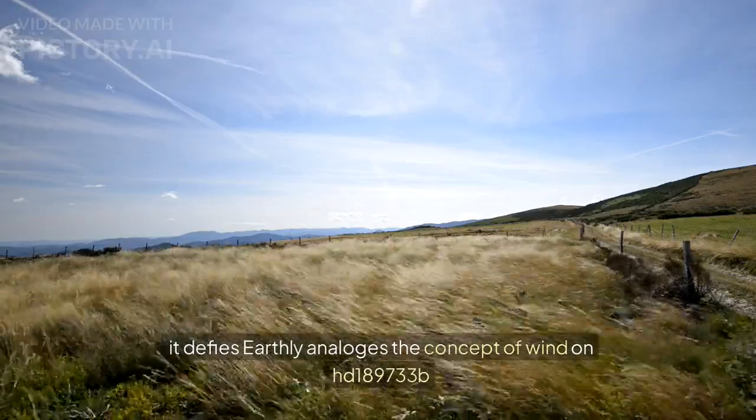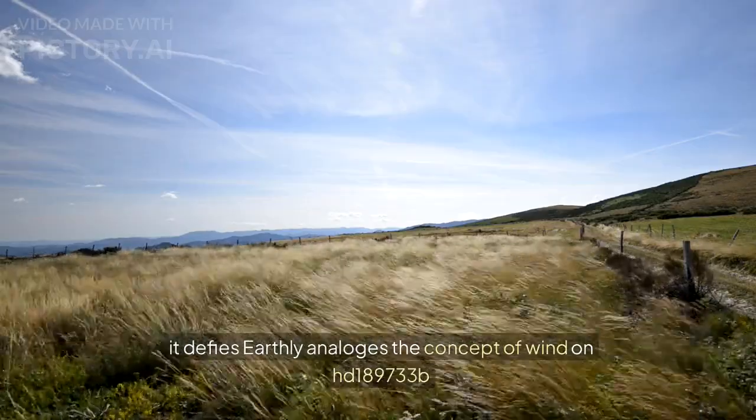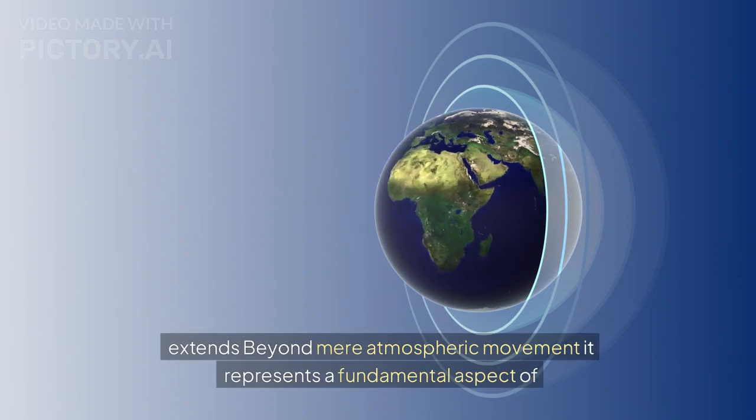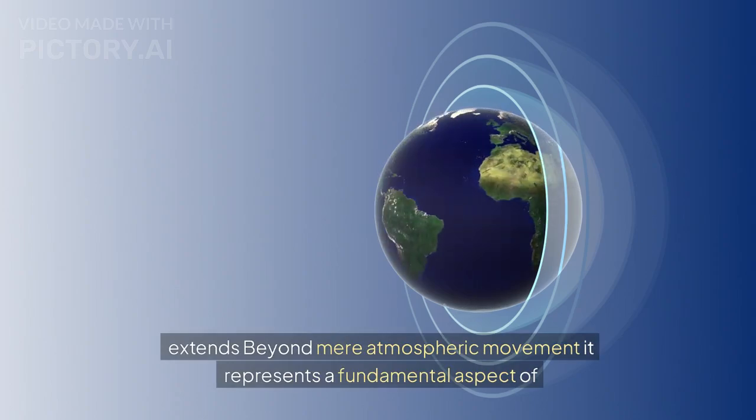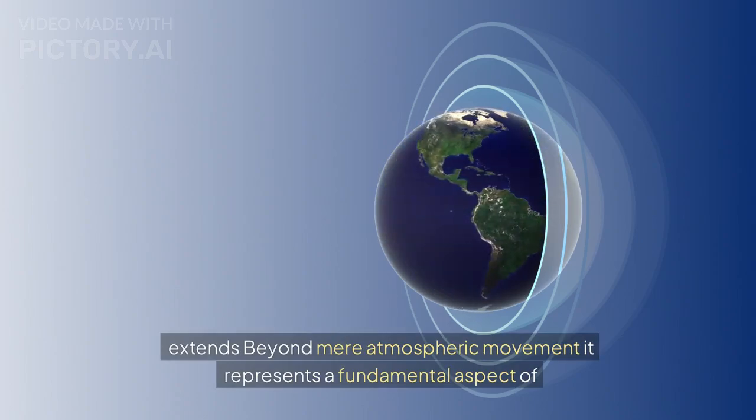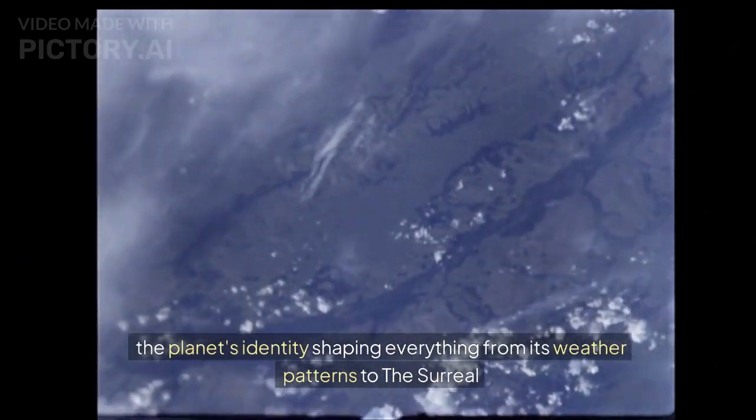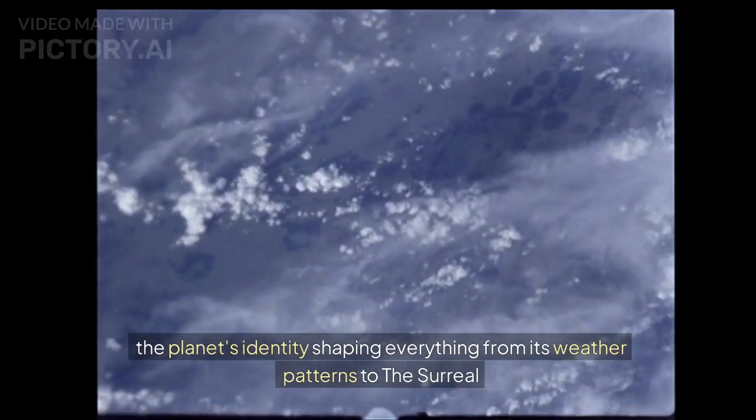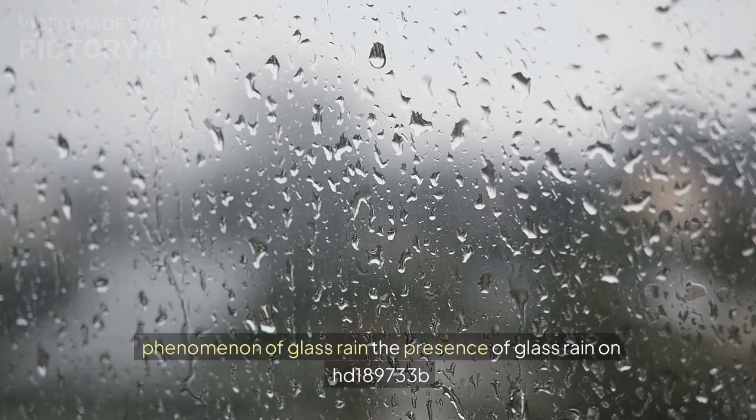The concept of wind on HD 189733b extends beyond mere atmospheric movement. It represents a fundamental aspect of the planet's identity, shaping everything from its weather patterns to the surreal phenomenon of glass rain.